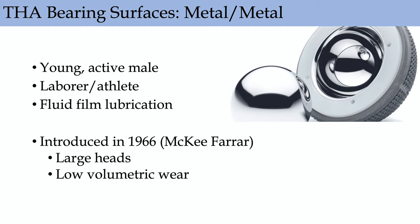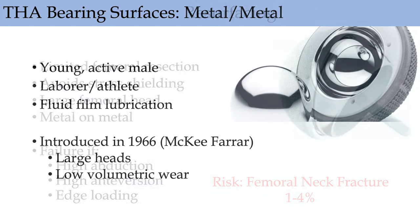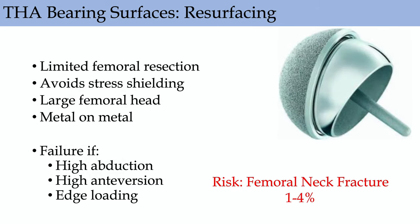Metal-on-metal lubrication for hard-on-hard surfaces will be discussed later. The original reason they were introduced was large femoral heads and low volumetric wear. Metal-on-metal can also be used for resurfacing — reserved for younger, very active males. Large femoral head decreases dislocation risk. You're avoiding femoral resection, potentially preserving bone for future conversion to THA. Component positioning is extremely important to avoid high abduction, high anteversion, and edge loading. There's also a risk of femoral neck fracture with resurfacing.